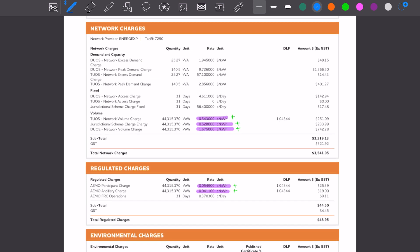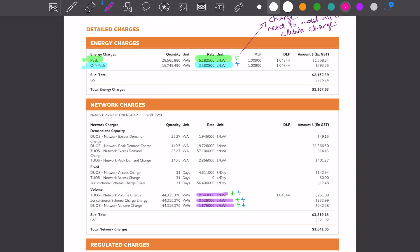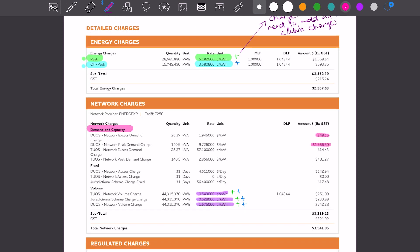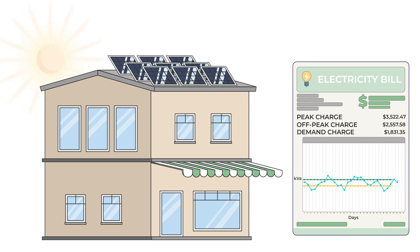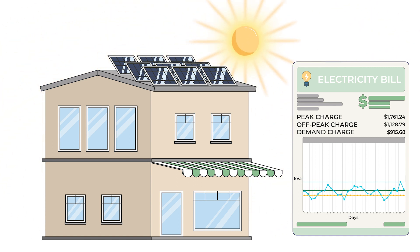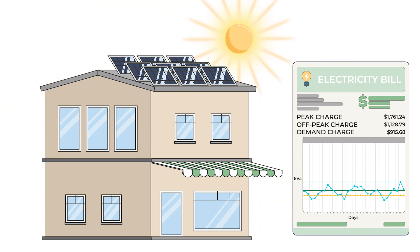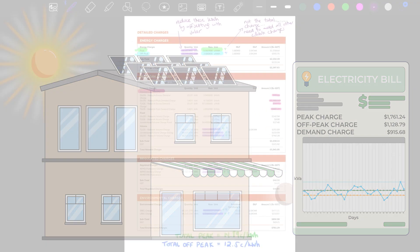Still a really good rate, but remember this client uses over 1,400 kilowatt hours per day. So a peak rate of about 14.89 cents, and then we've got the demand charges as well. If we're looking at a solar system for that client, it's going to be able to offset the peak rate of 14.89 cents and the off-peak rate of about 12.5 cents. We'll have some effect on the demand charges depending on when that demand charge occurs and whether we've got a full month of sunshine. But the main effect solar will have on this bill is reducing those kilowatt hour charges of nearly 15 cents and about 12.5 cents.